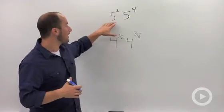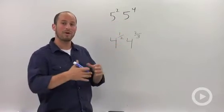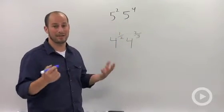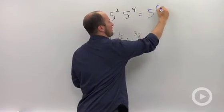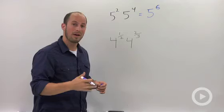Let's look at 5 squared times 5 to the fourth. When we are multiplying our bases, all we have to do is add our exponents. So this just becomes 5 to the sixth.